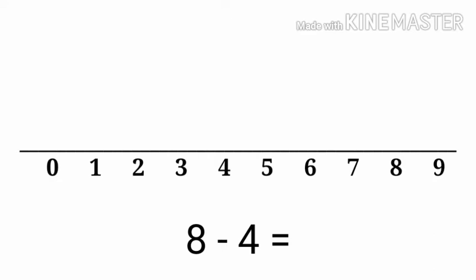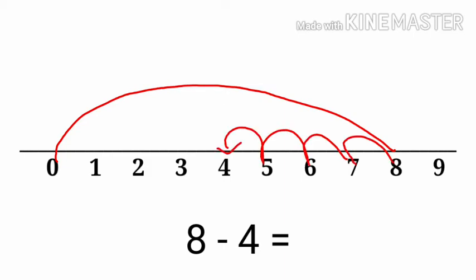When we do subtraction on the number line, first we go from 0 to 8 — we will put 8 on the number line. Now what do we do? From 8, we do backward counting. Since we have 8 minus 4, we will do backward counting 4 times, taking one step at a time: 1, 2, 3, 4. So the answer is 4.